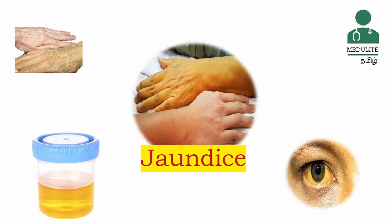Bilirubin is present in normal days in the body. The blood cells are in the body, and with cell metabolism, we have RBC. When the RBC breaks down, the breakdown of the RBC occurs in the bone marrow.